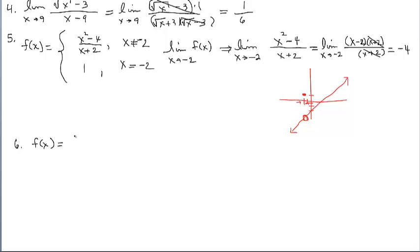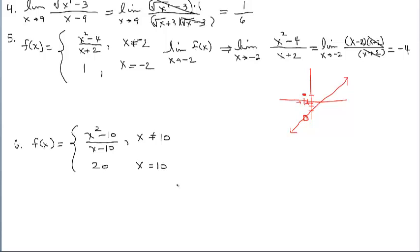For this last example, we're working with another piecewise function for additional practice. This piece is defined for all x's except 10, and down here we let the y-value at x equals 10 be 20. The limit question is the limit as x approaches 10 of this function. We're not working with the bottom piece because that's when x equals 10 — we're not asked for the functional value at 10. This is the piece we want to work with.